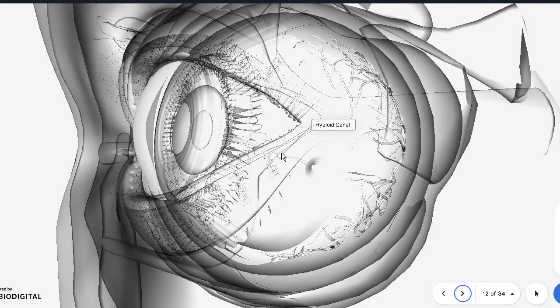Hyaloid canal is a small remnant during the embryological life when the eye was forming. There was a small pathway for a hyaloid artery that supplied the structures in front. But then that artery disintegrates and you have this canal left in this vitreous body. This is the remnant of the embryological eye.